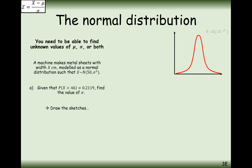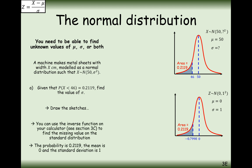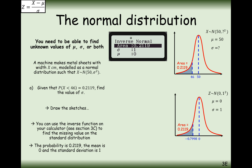Once again, draw your sketches of both distributions. You know that 46 or below has an area of 0.2119. On the standard normal distribution, there is some marker below which the area is 0.2119. This doesn't correspond to a percentage points table value, so use the inverse normal mode on the calculator. I know the area to the left is 0.2119, with standard deviation 1 and mean 0, giving a marker of minus 0.7998.